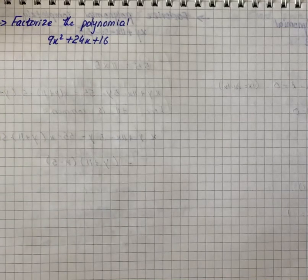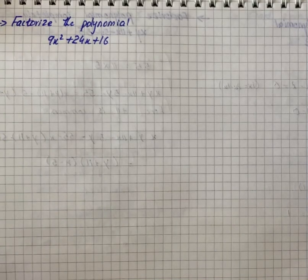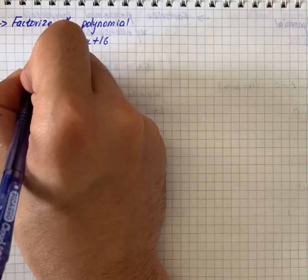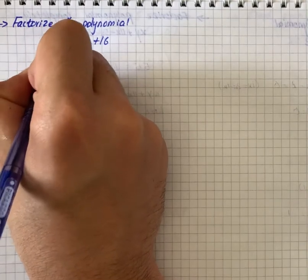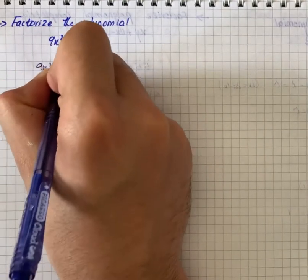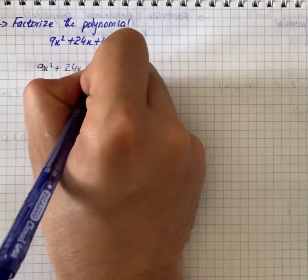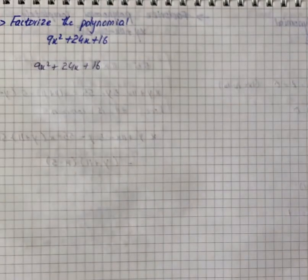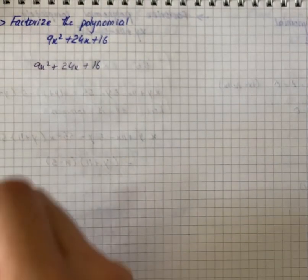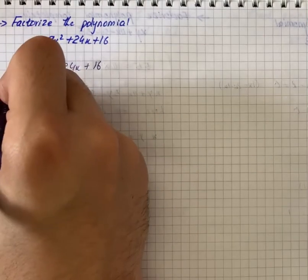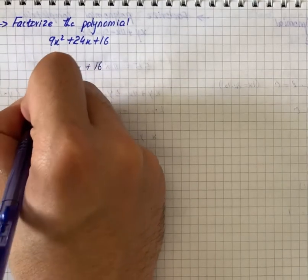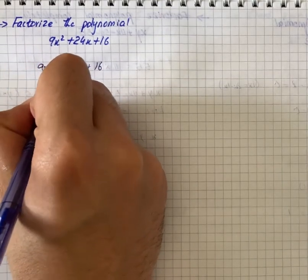The question says: factorize the polynomial 9x squared plus 24x plus 16. This polynomial can be factorized by using the factoring perfect square trinomial technique.